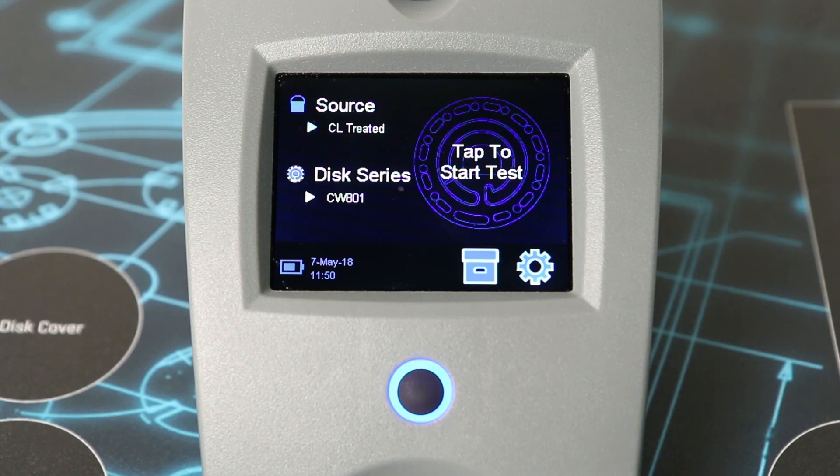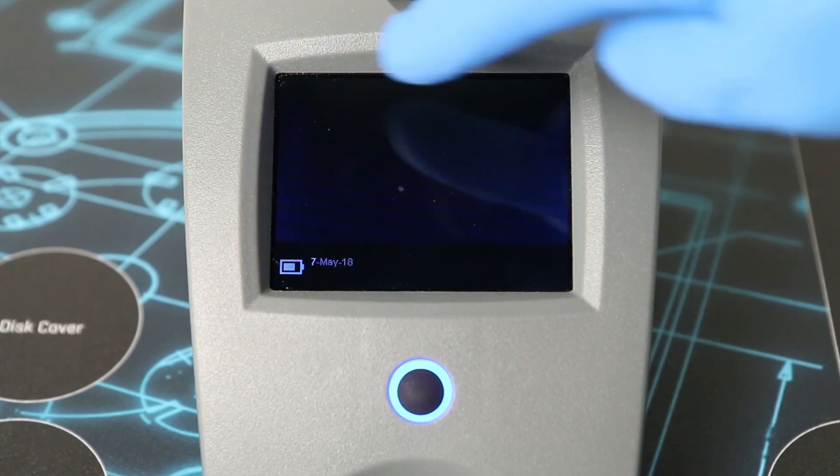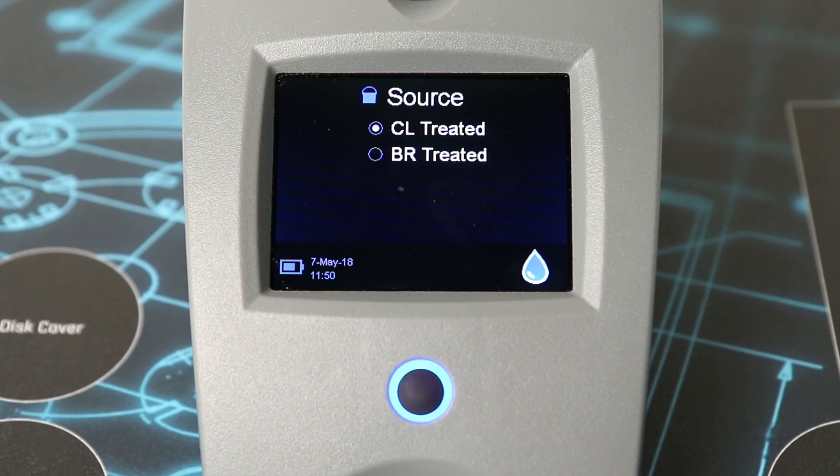Tap the bucket icon to select a water source type. Tap the drop icon to confirm.